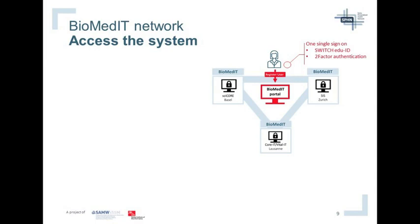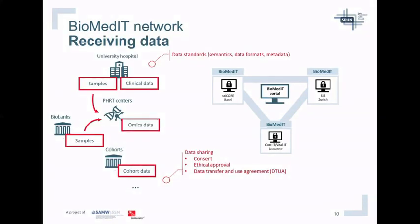The project lead can create registered users who will work with them on the respective project. Data coming into the BiomedIT network includes hospital data, PHRT center data such as the genome and proteomics centers, cohort data, and registry data. We are working hard on data standardization — semantics, data formats, and metadata — all of which must be harmonized and made interoperable before use for research, to make life easier for the researcher and even to make research projects possible at all.